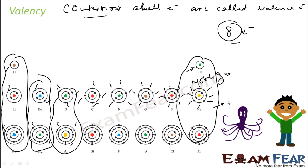So their valence electrons are 8, but their valency is 0 — the combining capacity is 0; they won't combine. Just as a human has 2 hands and an octopus has 8 hands, you can think of valency that way. Helium, neon, argon are all noble gases; they don't interact with other elements. So their valency is 0, but their valence electrons are 8 — or 2 in the case of helium.